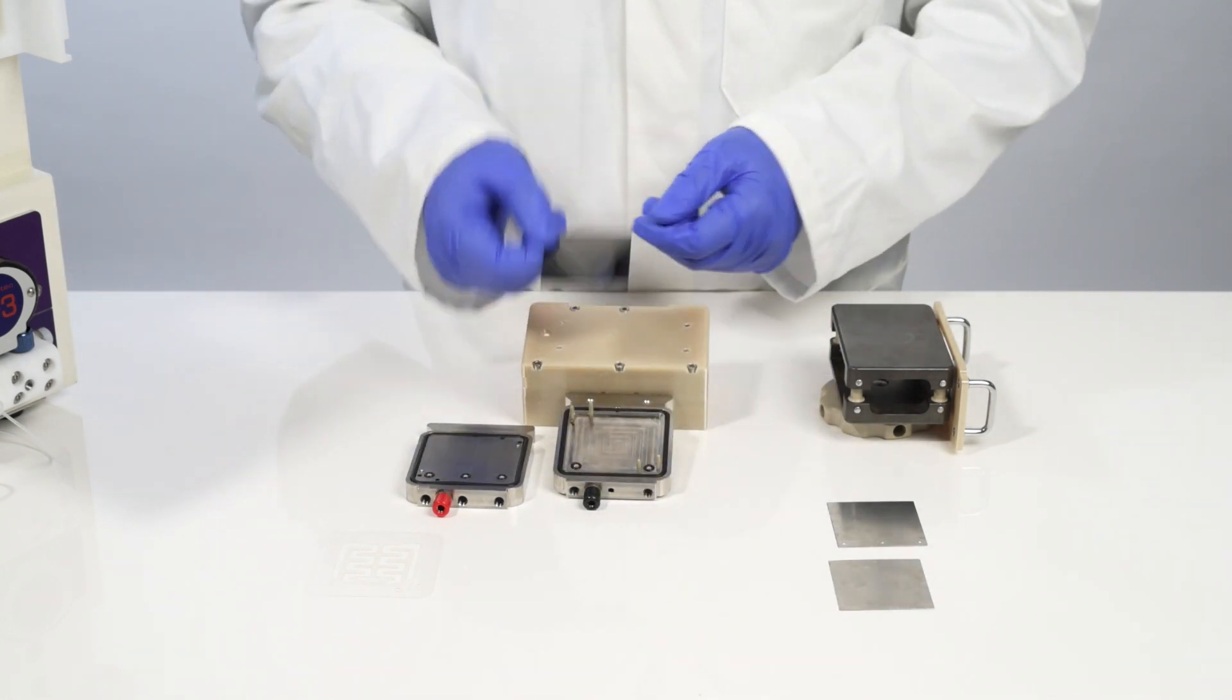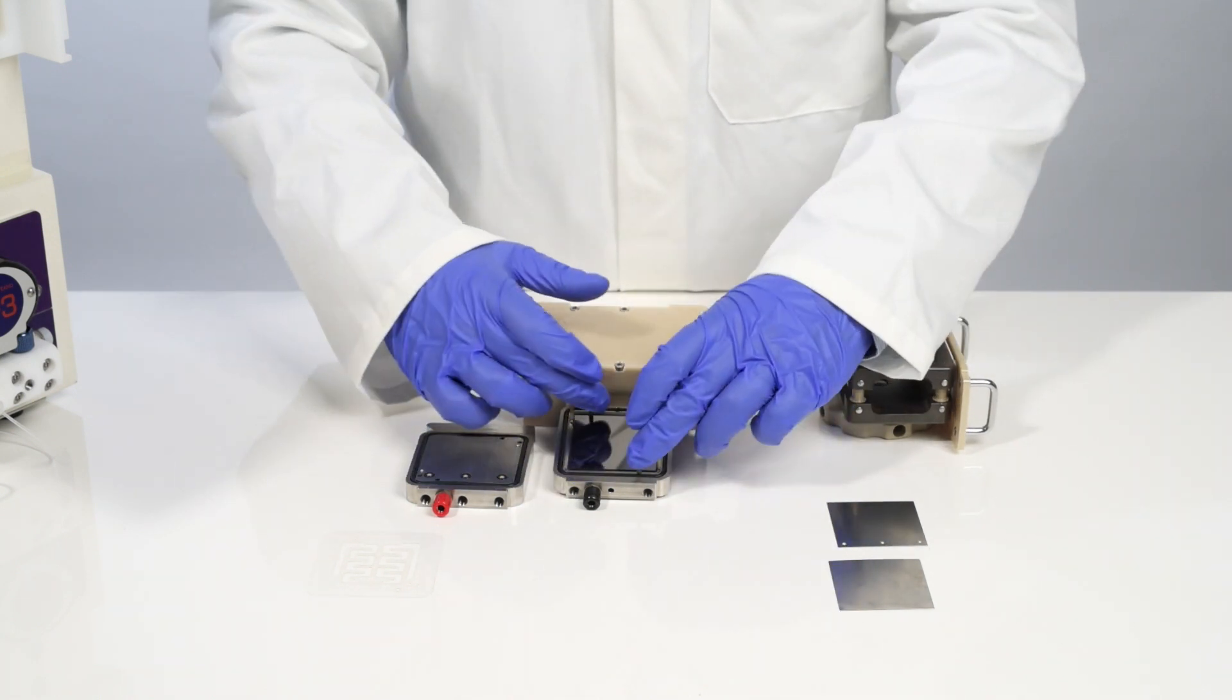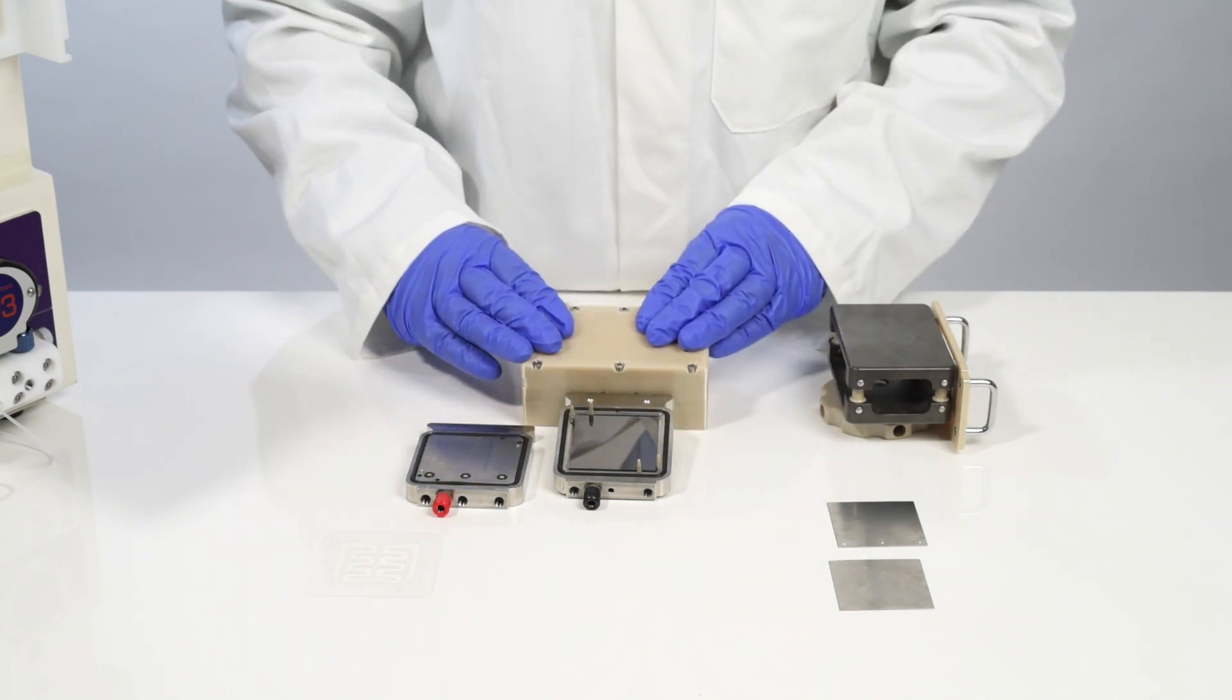I'm going to replace it with a carbon electrode. The electrode is located by these two pins here and just sits flat on the bottom of the electrode carrier.